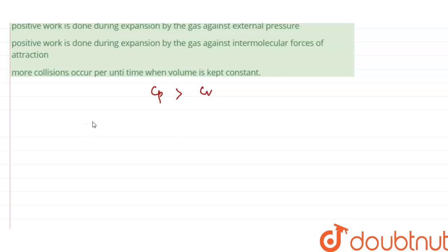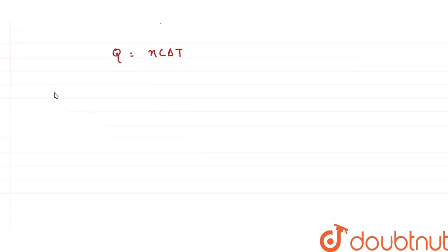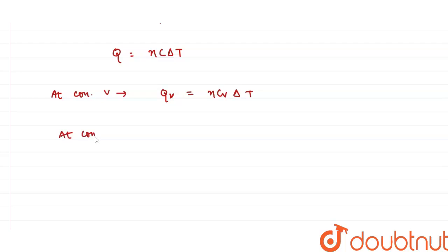We know that heat for any process is given by Q = nCΔT, where n is the number of moles, C is specific heat, and ΔT is the temperature difference. At constant volume, this is written as Qv = nCvΔT, where Cv is molar specific heat at constant volume. Similarly, at constant pressure, the heat is written as Qp = nCpΔT, where Cp is molar specific heat at constant pressure.